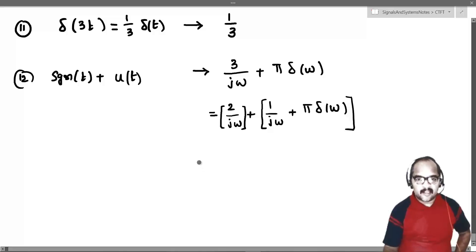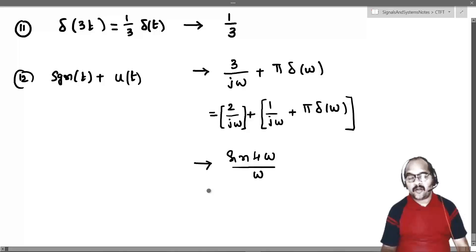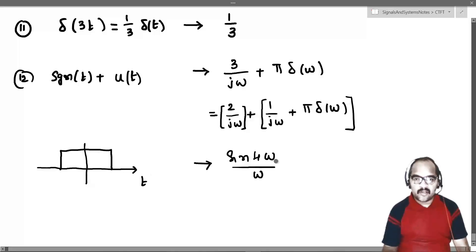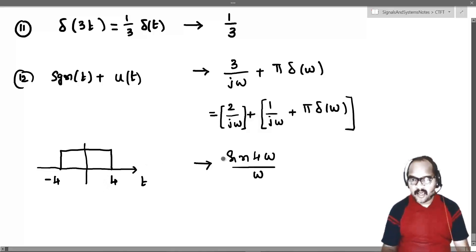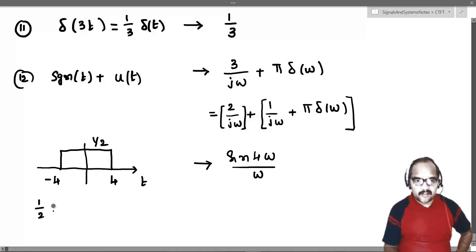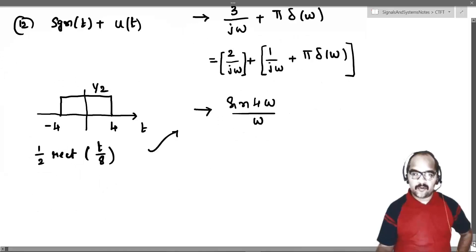Thirteenth example: which signal will have sine 4 omega by omega as its Fourier transform? This is a rectangular function with capital T equal to 4, giving a range from minus 4 to plus 4. However, the factor of 2 is missing, so the amplitude must be multiplied by 1 by 2. Therefore 1 by 2 rect of T by 8 — since the width of the rectangular function is 8 — will have sine 4 omega by omega as the Fourier transform.